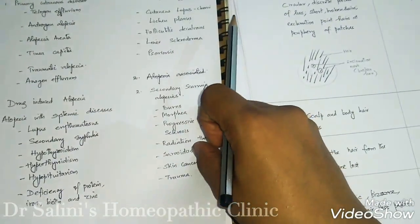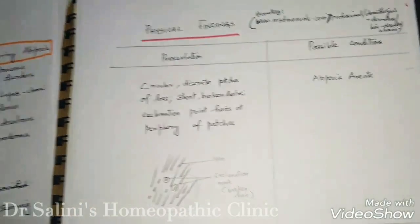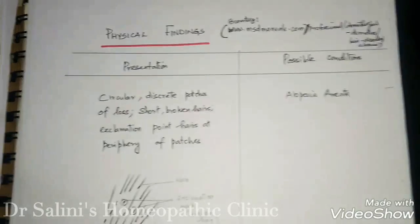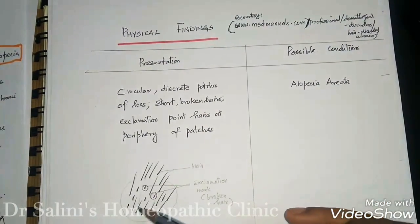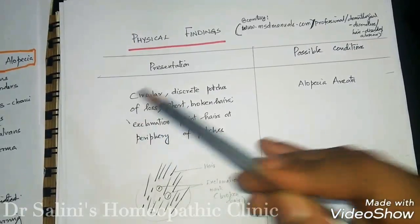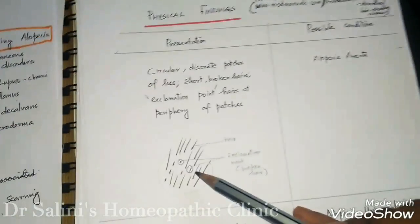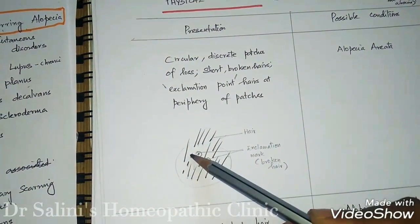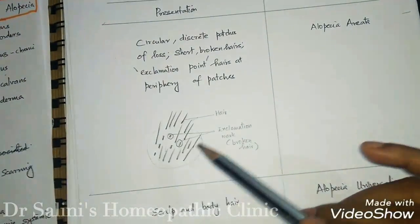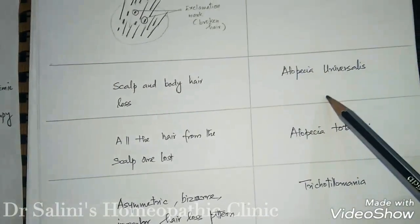Now, it will be easier for us as doctors to identify the possible condition based on presentation. If a person presents with circular discrete pattern patches of hair loss and short broken hairs — known as exclamation point hairs at the periphery — where you see normal hair and broken hair shaped like an exclamation mark, this is a classical symptom of alopecia areata.